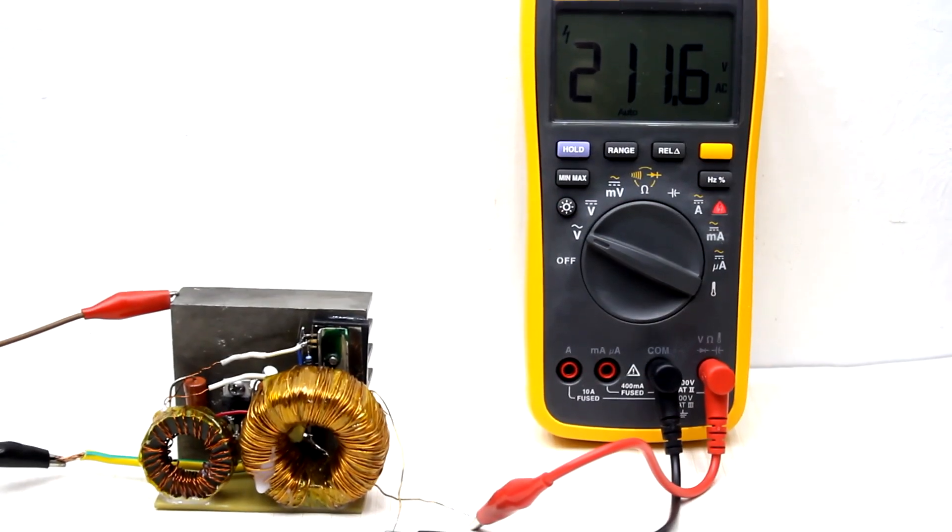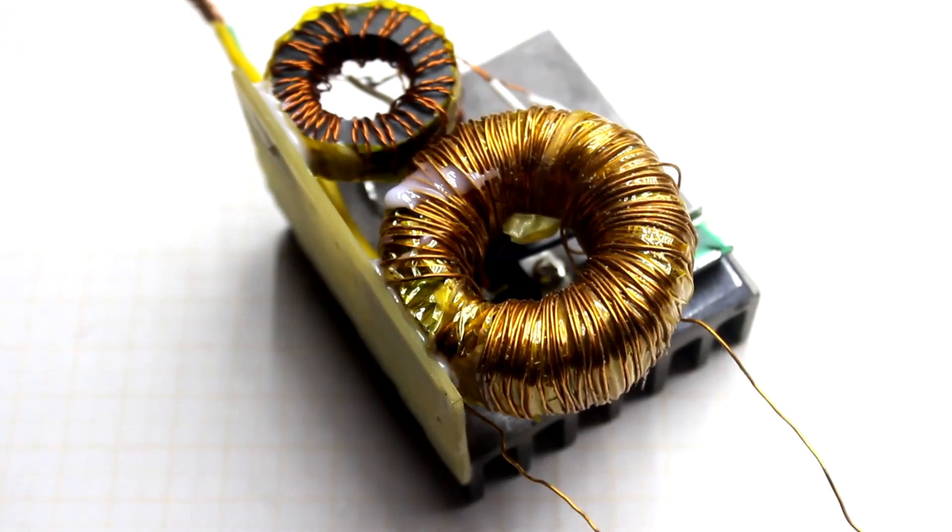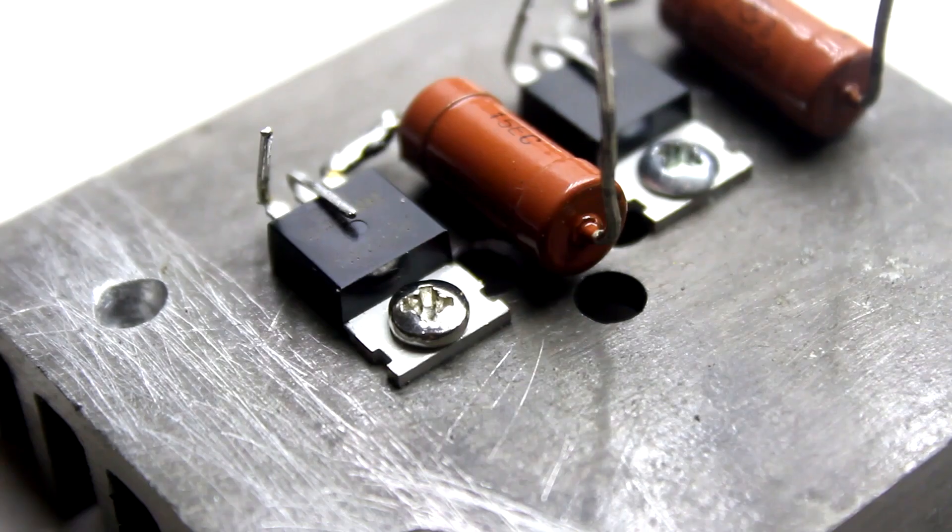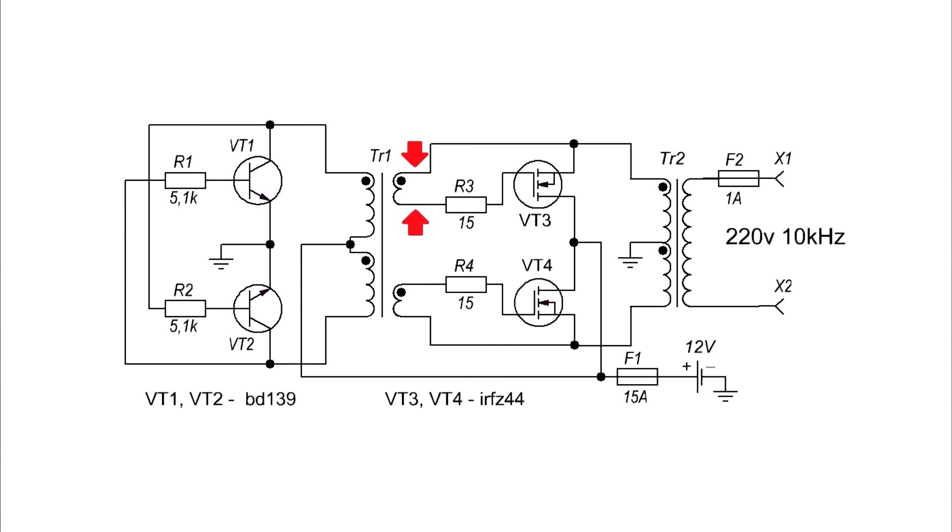As the circuit is very simple, the PCB is not required at all. If the assembled inverter doesn't start at all, or after start the power transistors heat up, you need to interchange the ends of the master winding for one of the transistors.